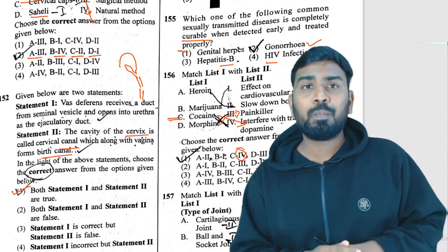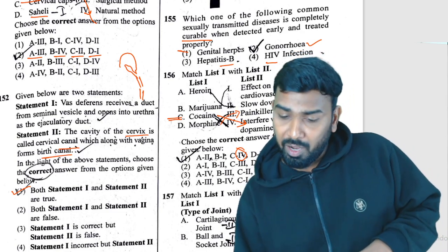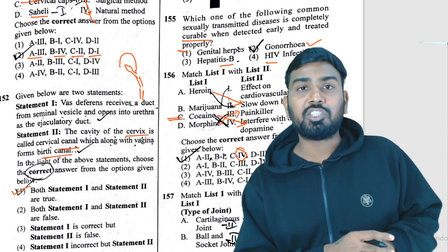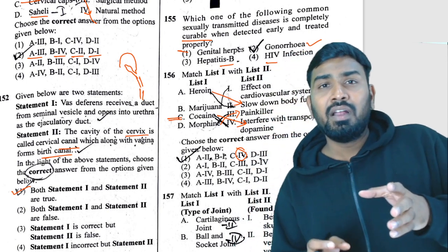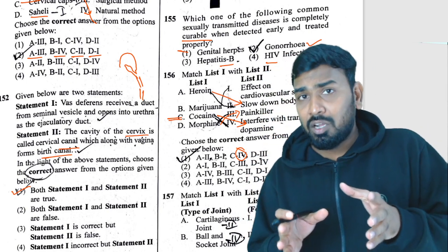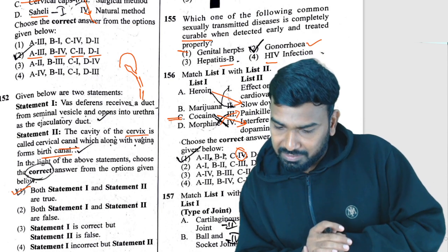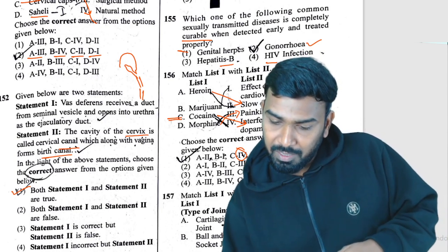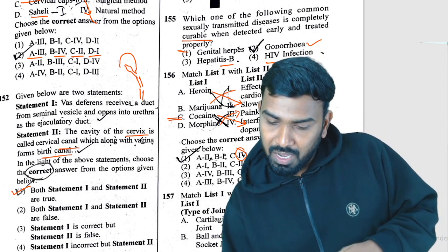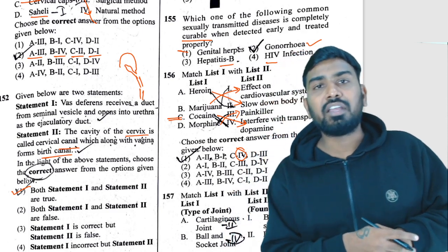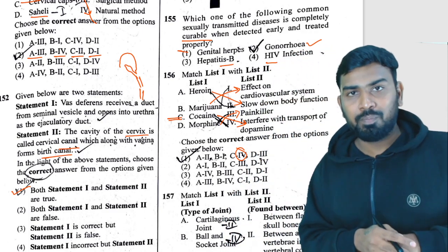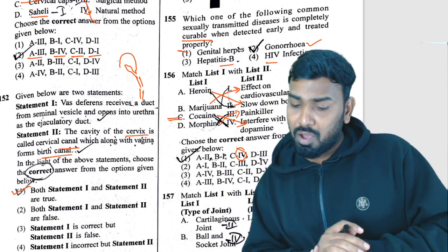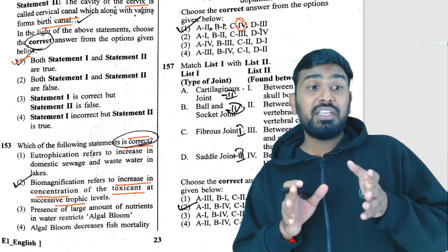Continuing Q156: morphine is a pain killer used effectively for persons who have undergone surgery. Heroin slows down body functions. Marijuana has an effect on the cardiovascular system. The answer was already found from the cocaine-dopamine match.